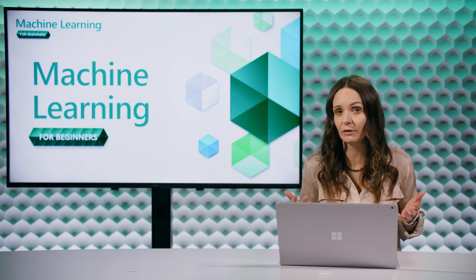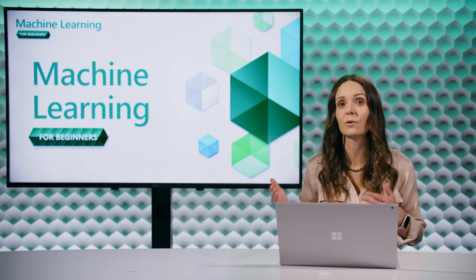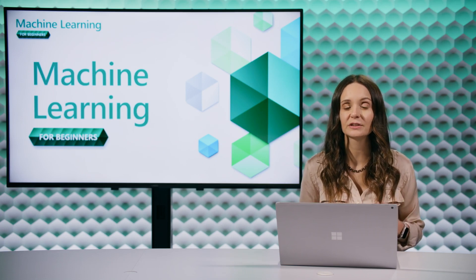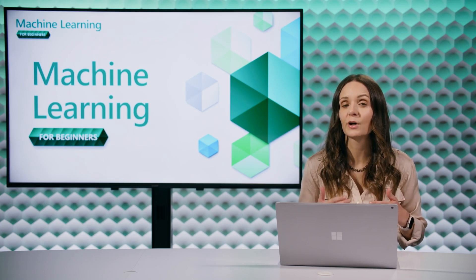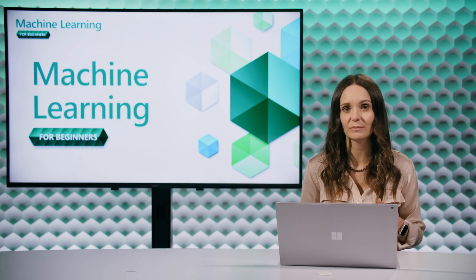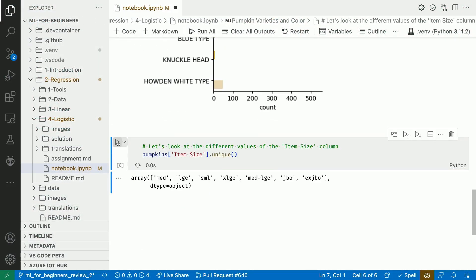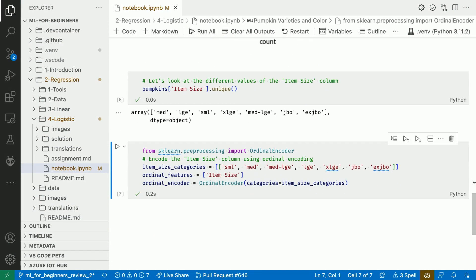One-hot vectors are great when the different categories in a feature don't have an implied order. But sometimes categories do have an implied order, and for those scenarios we can simply replace the strings with increasing numbers. For example, the pumpkin's item size has an implied order. Let's look at all the pumpkin sizes in our data. Looking at these strings, we can easily define the order of these categories, and we can use an ordinal encoder to convert this feature into integers from 0 to 6.